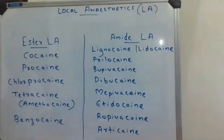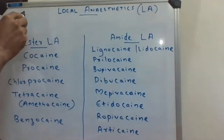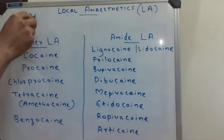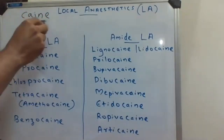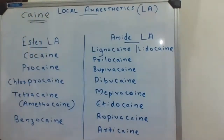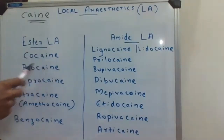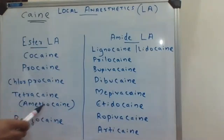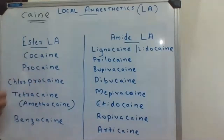Now coming to the examples of drugs belonging to each category. Remember one thing: the name of local anesthetics ends with the suffix 'caine' — C-A-I-N-E. The examples of ester local anesthetics are cocaine, procaine, chlorprocaine, tetracaine (also called amitocaine), and benzocaine. All these drugs belong to the ester local anesthetic category.